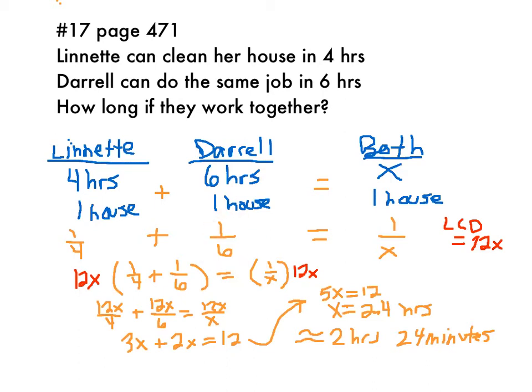And we want to know the rate if they work together, so one over x will be the rate that they clean the house in one hour. You need to multiply both sides of the equation by the least common denominator. In this case, four, six, and x gives us the least common denominator of 12x.